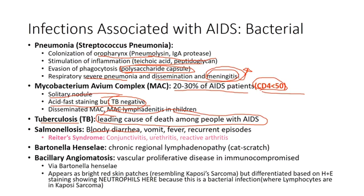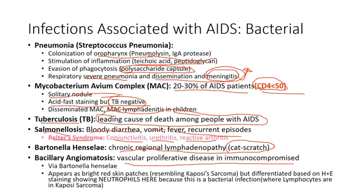Salmonella can cause chronic bloody diarrhea, vomiting, fever, and recurrent episodes. It can also cause Reiter's syndrome — conjunctivitis, urethritis, and reactive arthritis. Bartonella henselae, known for cat scratch disease, can cause regional lymphadenopathy and tumor-like growth called bacillary angiomatosis, a vascular proliferative disease very similar in appearance to Kaposi's sarcoma. Differentiation is made on H&E staining: bacillary angiomatosis is bacterial, so neutrophils respond; Kaposi's sarcoma is caused by HHV-8, so lymphocytes respond.